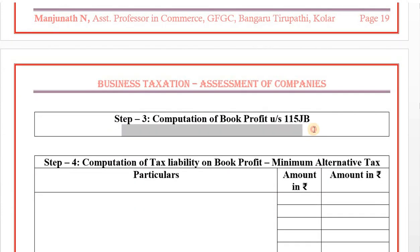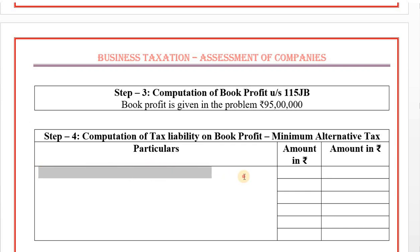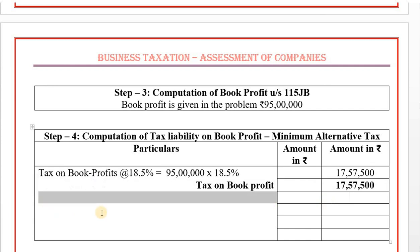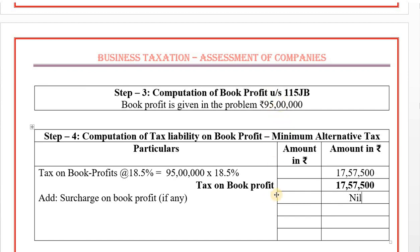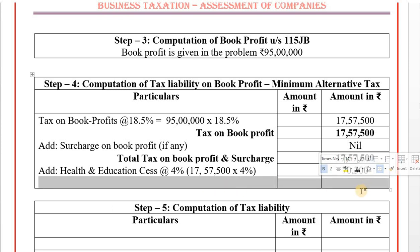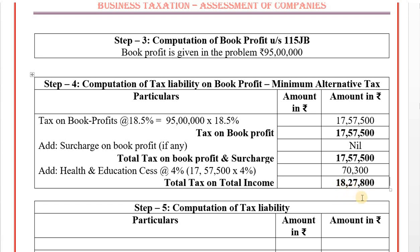Step number 3: Book profit is given in the problem as 95 lakhs. Step number 4: Tax liability on book profit at 18.5% minimum alternative tax — 95 lakhs into 18.5% equals 17,57,500. Surcharge is nil as total income is less than 1 crore. Health and education cess at 4% on 17,57,500 equals 70,300. Total tax on book profit: 18,27,800.